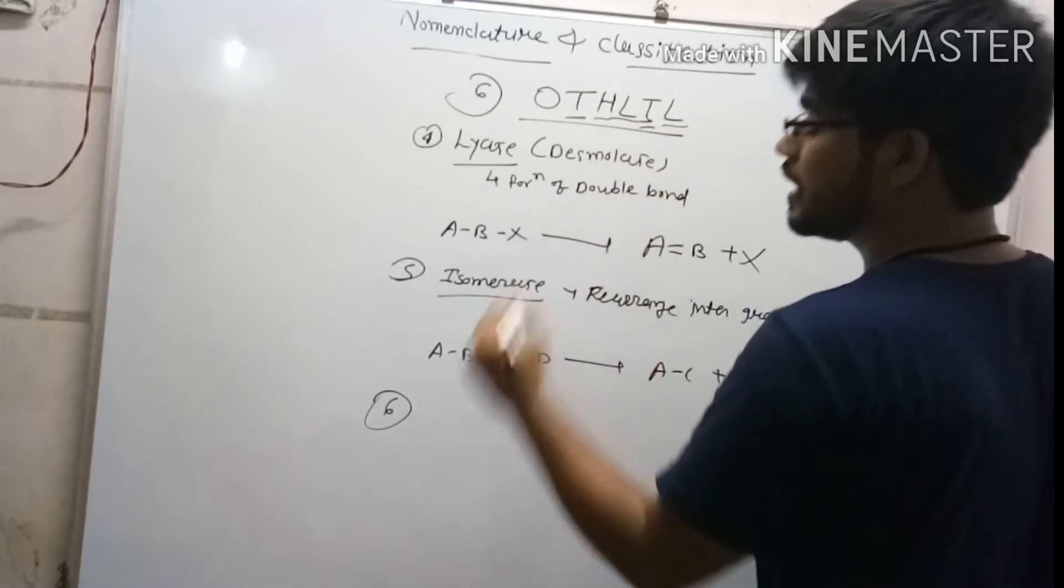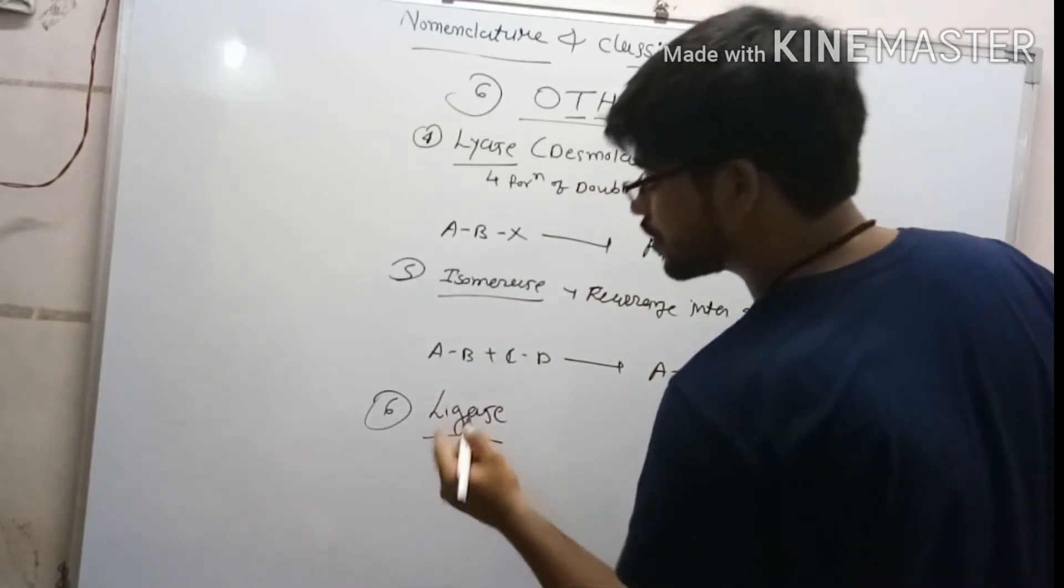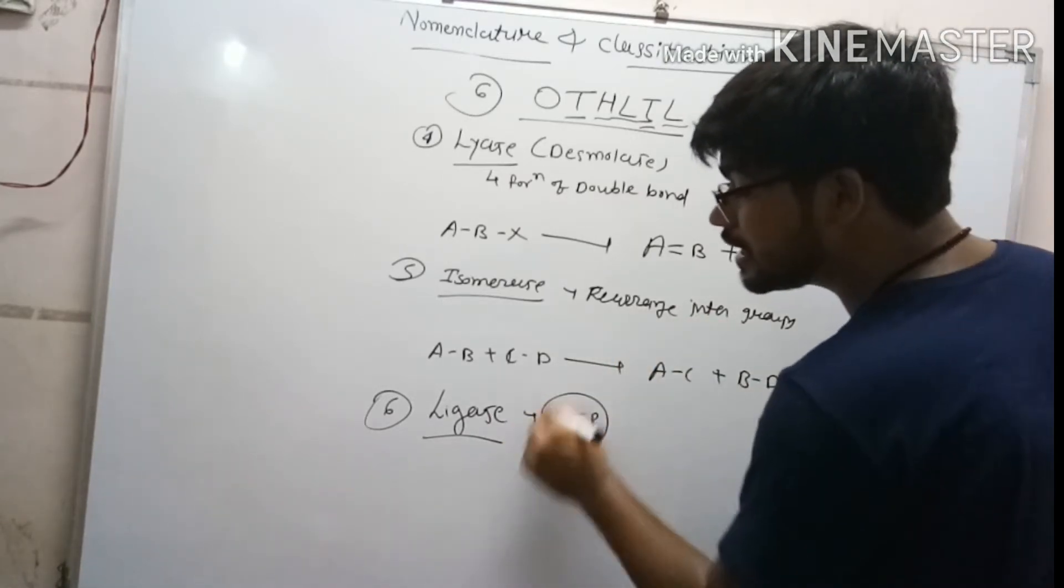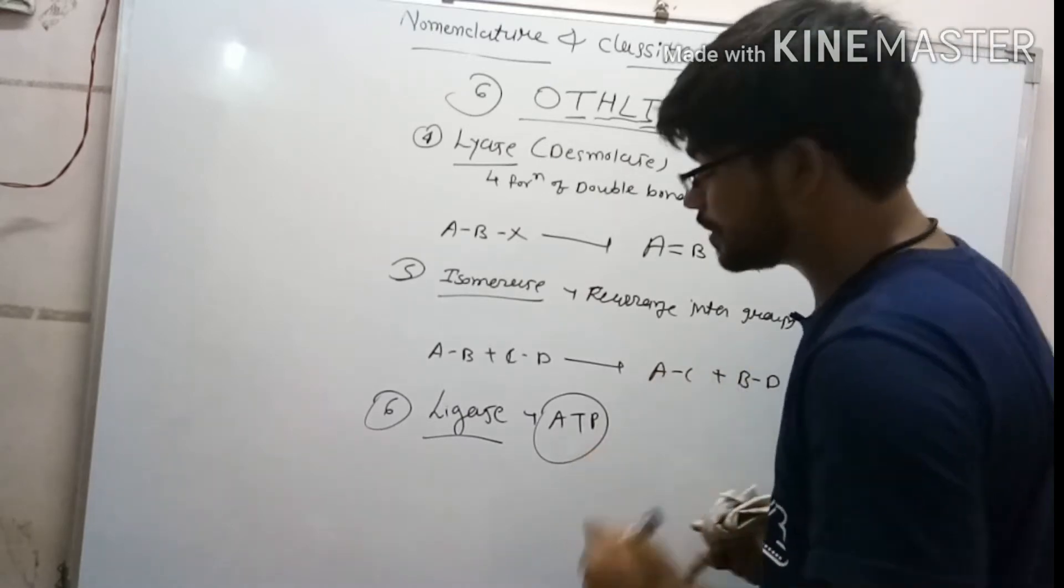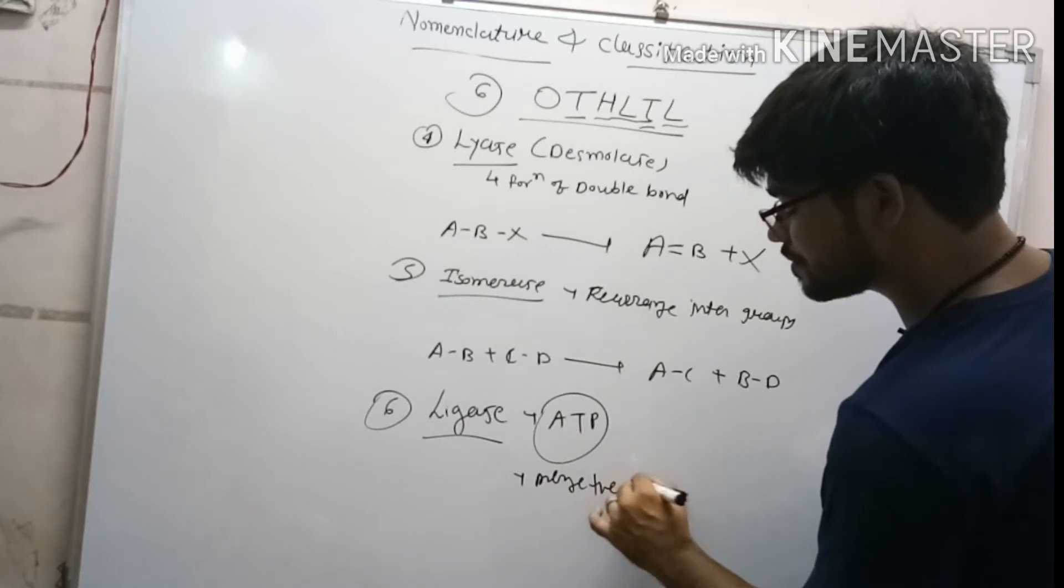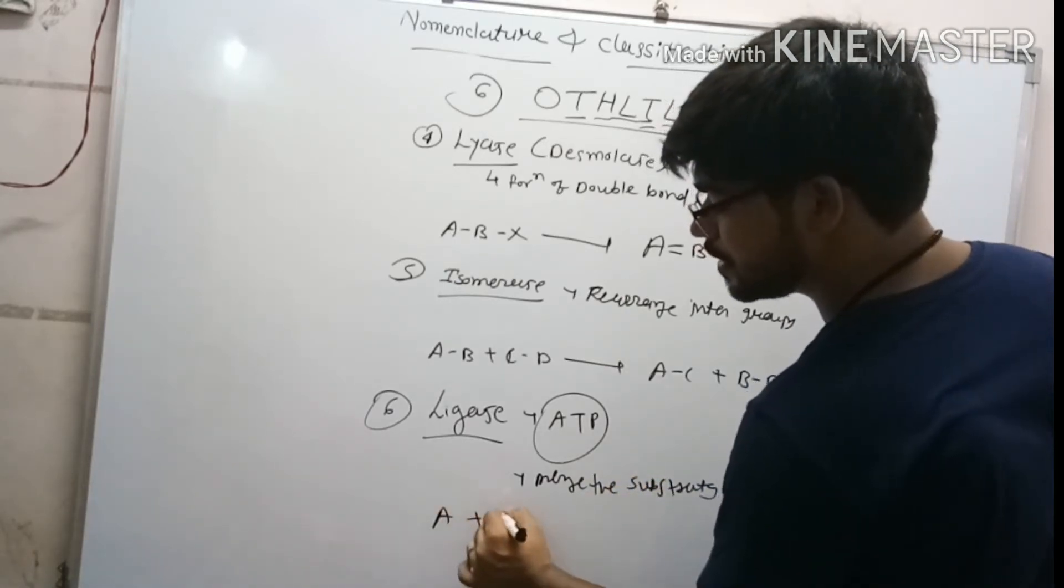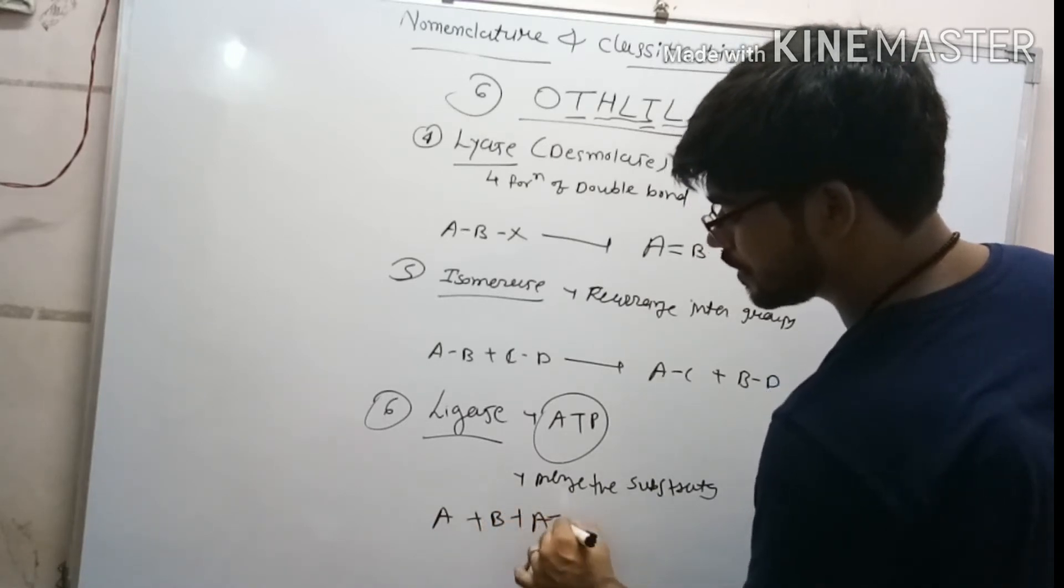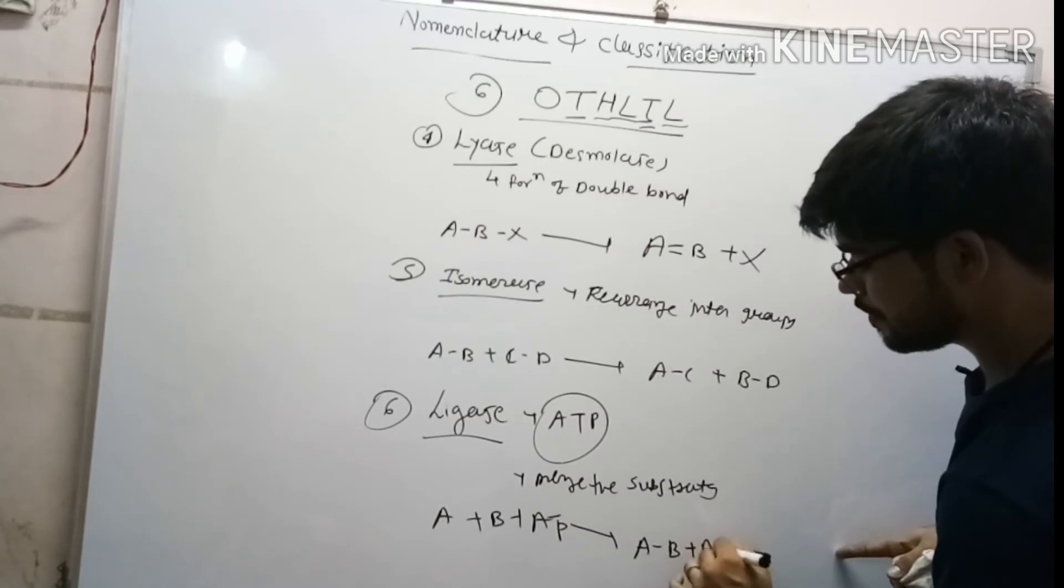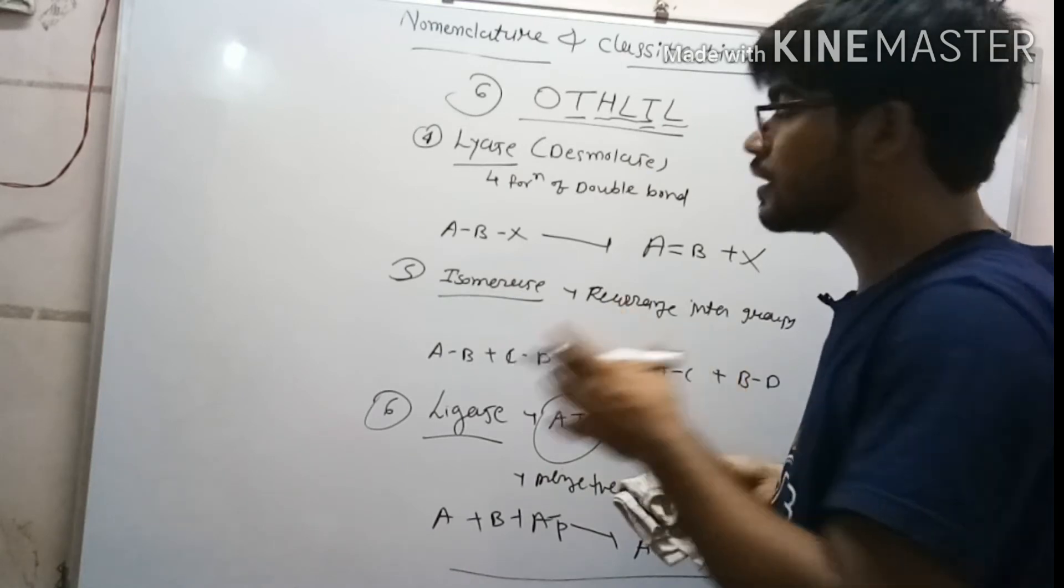The sixth and last one is ligase. It is very useful and you also heard our old name. Ligase uses ATP. It is the only enzyme which uses ATP and merges the bonds, merges the substrates. Like A plus B plus ATP, it gives AB plus ADP plus inorganic phosphate.